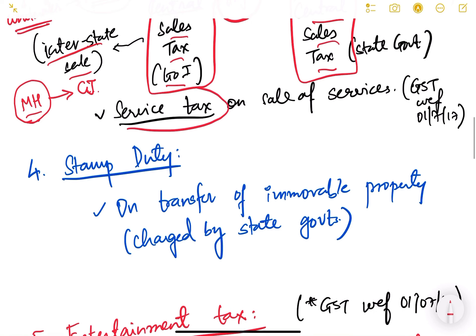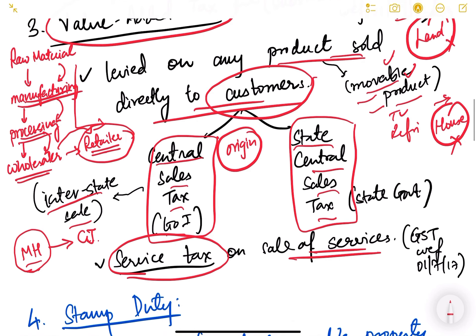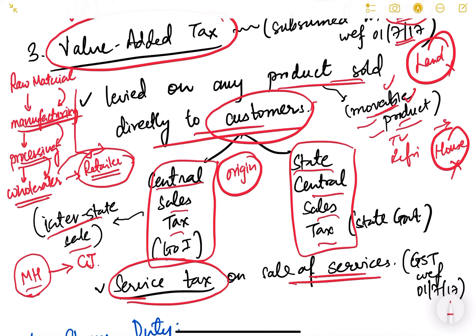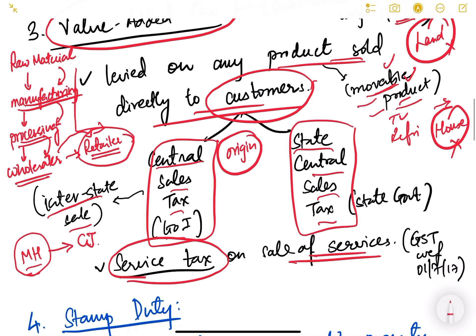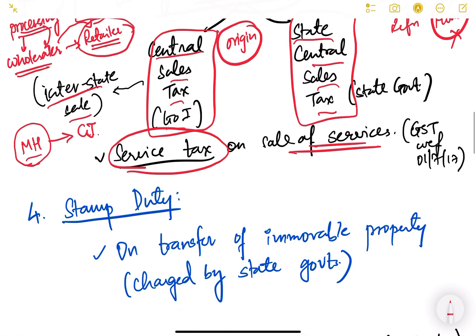Service tax is imposed on the sale of services, whereas VAT is only on movable goods. Service tax covers services like hotelling, accommodation, transportation, and different kinds of services. Service tax has been subsumed under GST with effect from 1st July 2017.